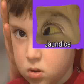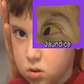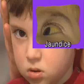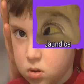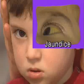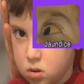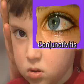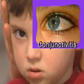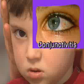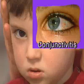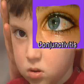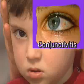In jaundice, the sclera are affected like the skin and turn yellowish. On irritation, the conjunctiva usually react unspecifically with greater vascular injection, giving the impression of red eyes.